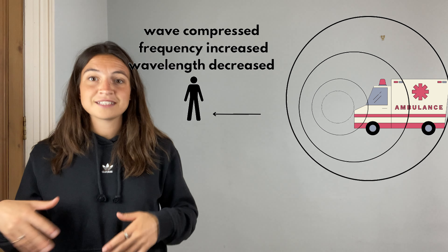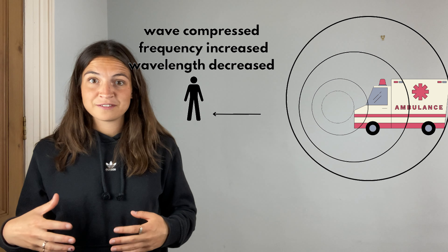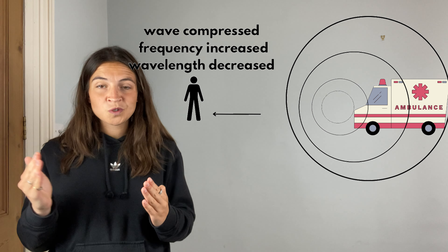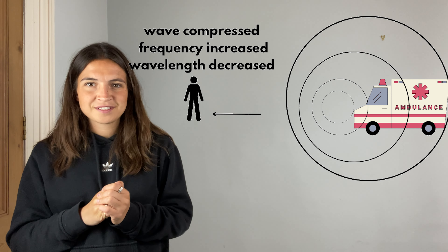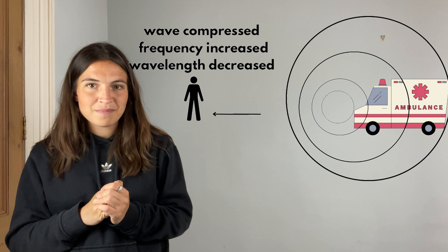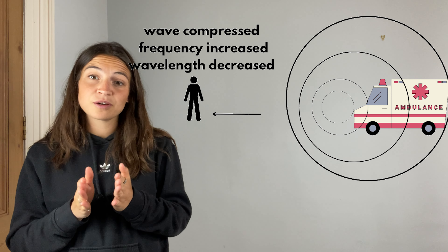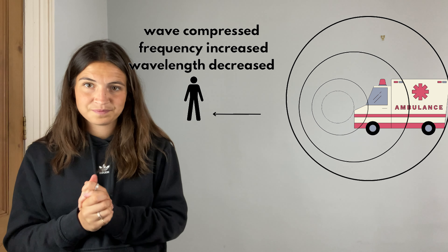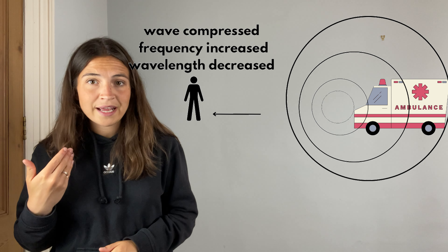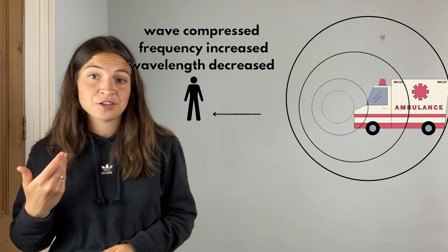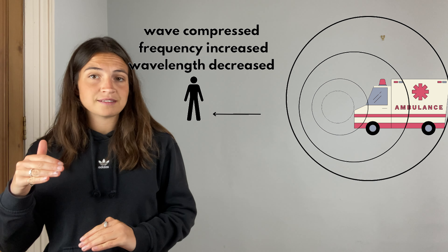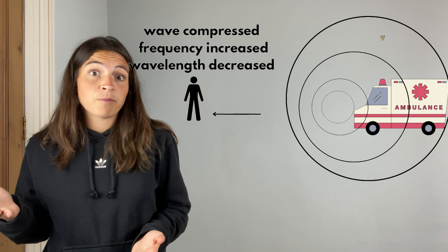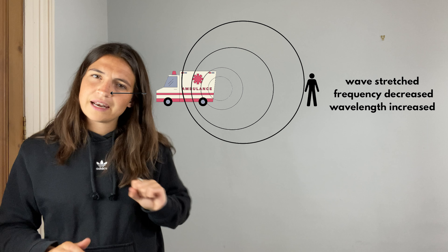So, what's happening here? As the source of the waves moves towards a stationary observer, the waves that it emits get compressed. There are more waves passing you per second, so you get a higher frequency and therefore a higher pitch.